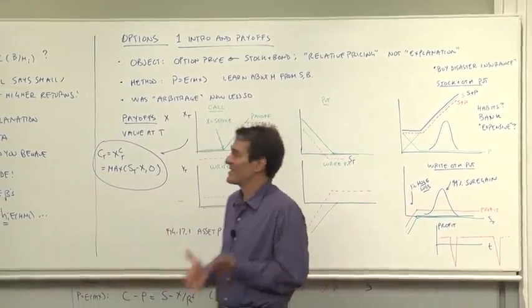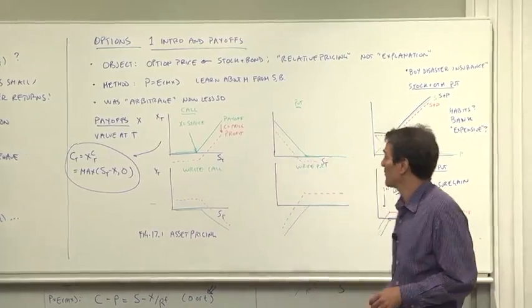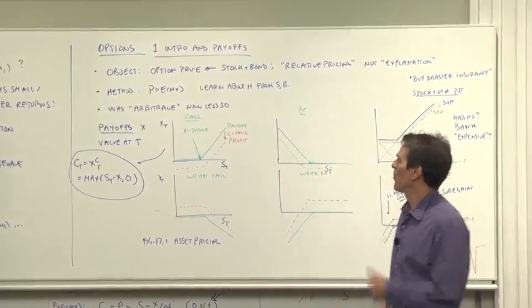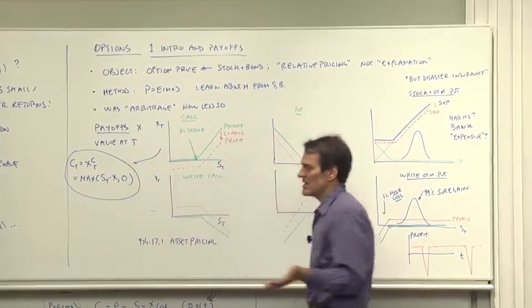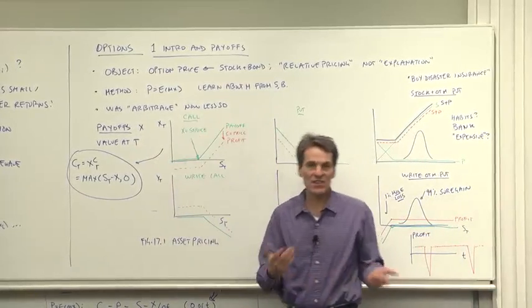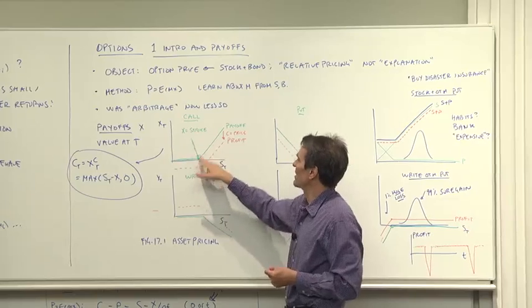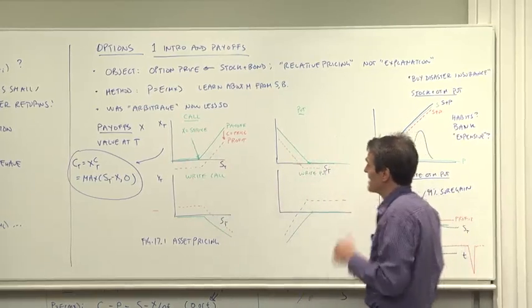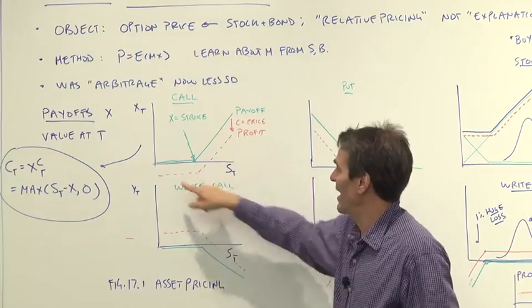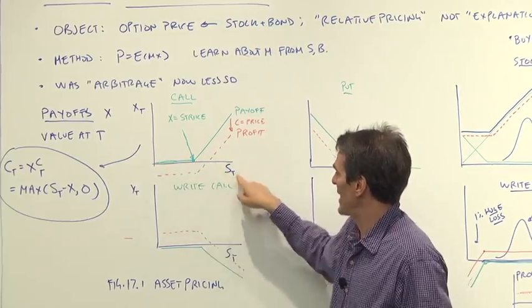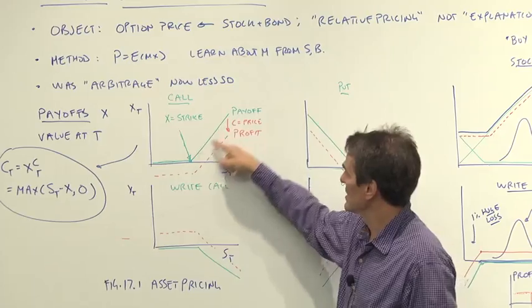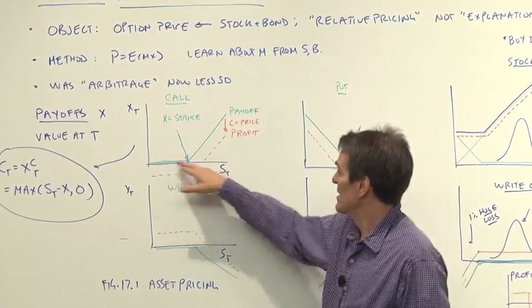So how do we do price-is-expected-payoff asset pricing? The first thing you have to do is understand the payoffs — what are the payoffs that options give you? What is the value at capital T, the date the options expire? A call option is the right to buy a stock at the strike price at the given date. The payoff is this bent line: nothing if the stock ends up at capital T being less than the strike price, and if the stock is greater than the strike price, it's worth the difference between the stock price and the strike price.